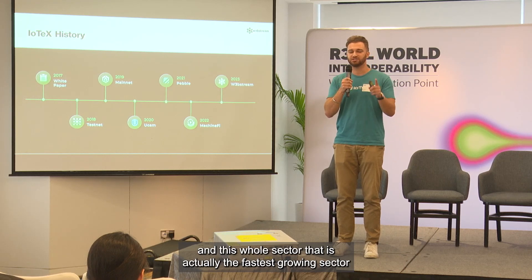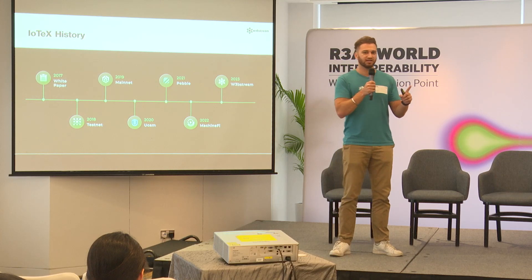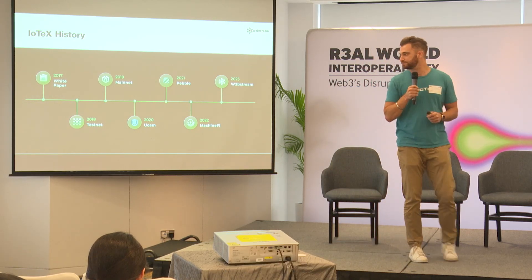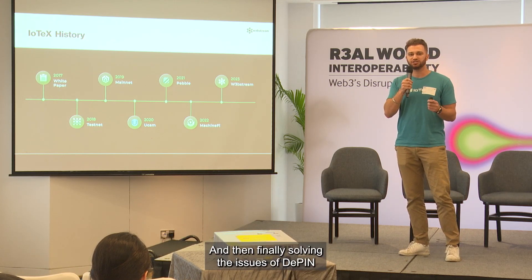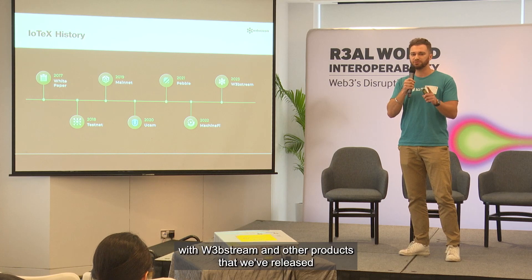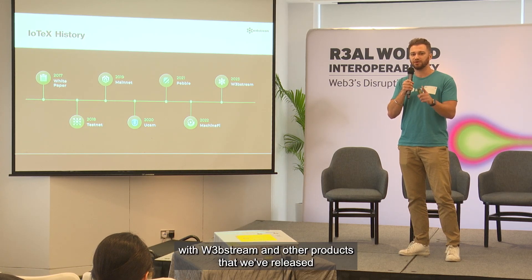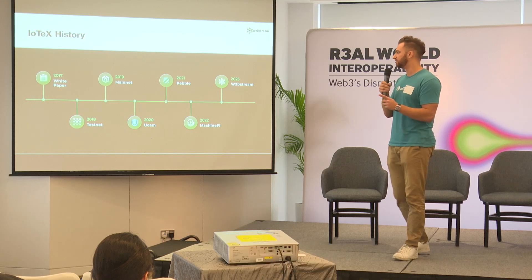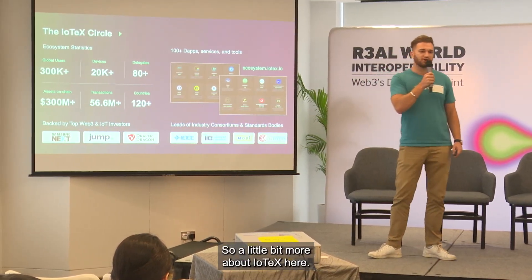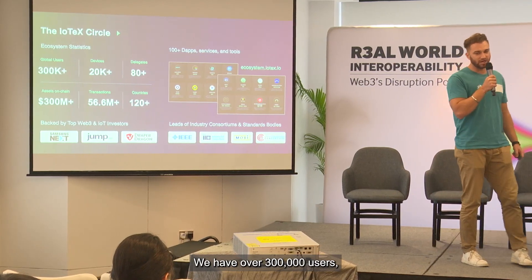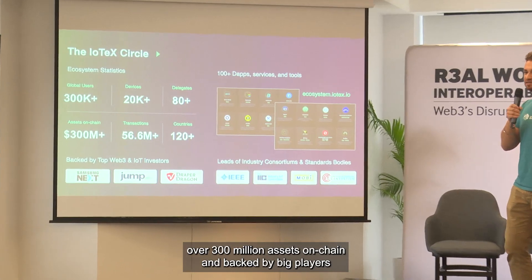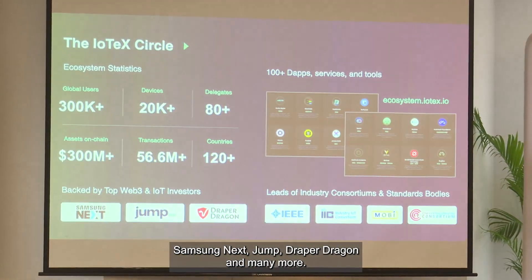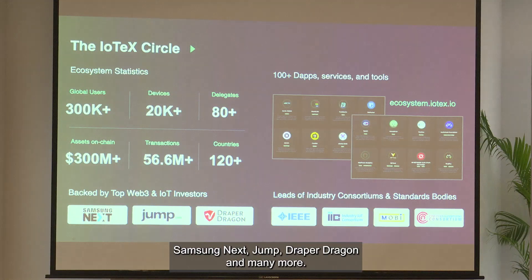In 2021 we launched our Pebble Tracker device, which really laid the foundation for MachineFi and DePIN — the fastest growing sector in crypto today. We've been solving the issues of DePIN with Web Stream and other products we've released and are going to launch in the next year. We now have over 300,000 users, over 300 million assets on chain, and are backed by Samsung Next, Jump, Draper Dragon, and many more.